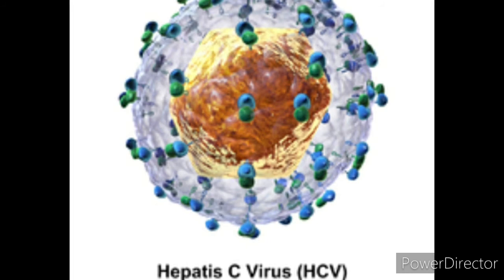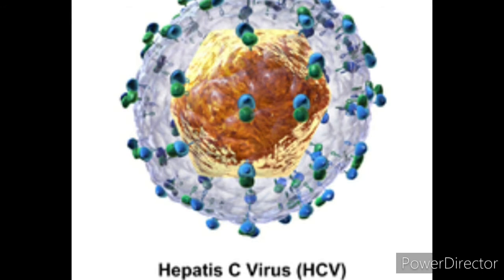The HCV antigens on the T-line include core antigen, NS3, NS4, and NS5. The C-line is pre-coated with a control line antibody. In the card technique, the sample migrates through capillary action.